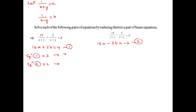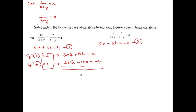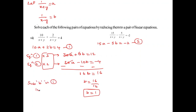After the operations, subtracting to remove A, we are left with 16B equals 16, so B equals 1. Substituting B equals 1 into equation 1: 10A plus 2 times 1 equals 4. Shifting gives 10A equals 4 minus 2, so 10A equals 2 and A equals 2 by 10, which simplifies to 1 by 5.